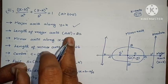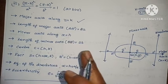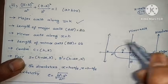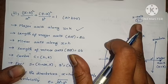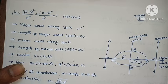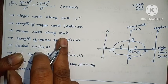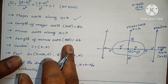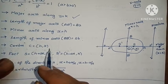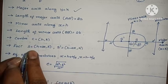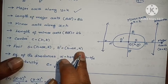Length of major axis AA' equals to 2a. Minor axis equation x equals to h, length of minor axis BB' equals to 2b. Center is (h, k). Focus S equals to (h plus ae, k) and S' equals to (h minus ae, k).